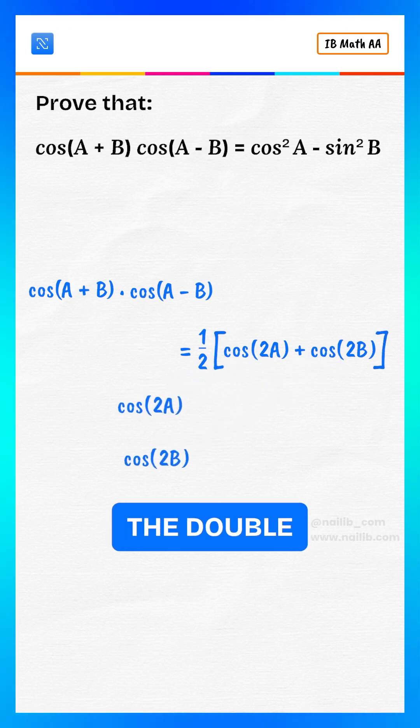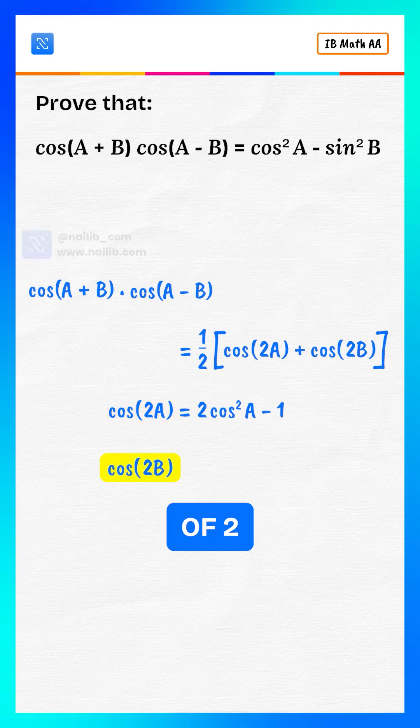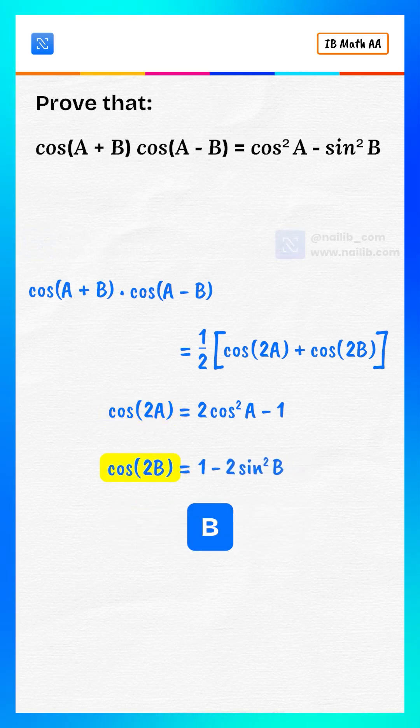Now use the double angle identities. Cosine of 2A equals two cosine squared A minus one, and cosine of 2B equals one minus two sine squared B.